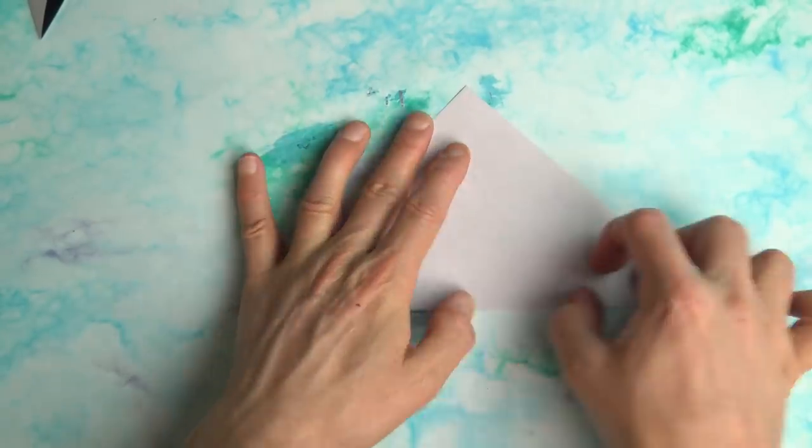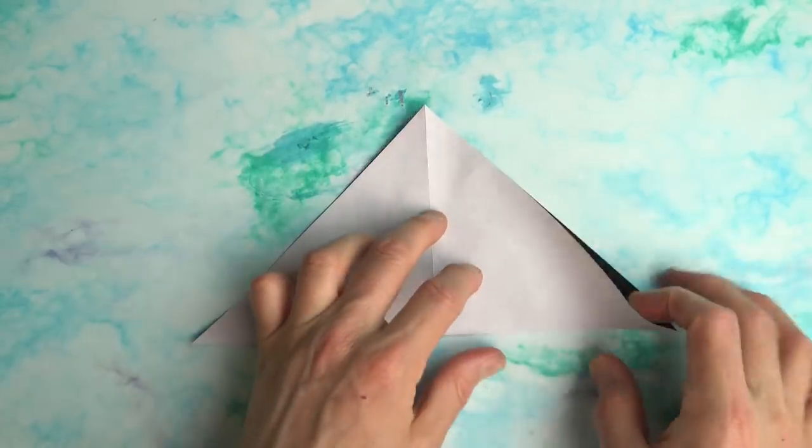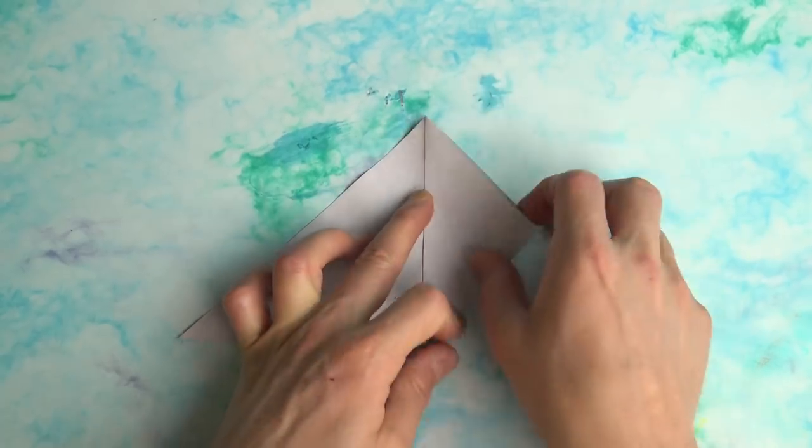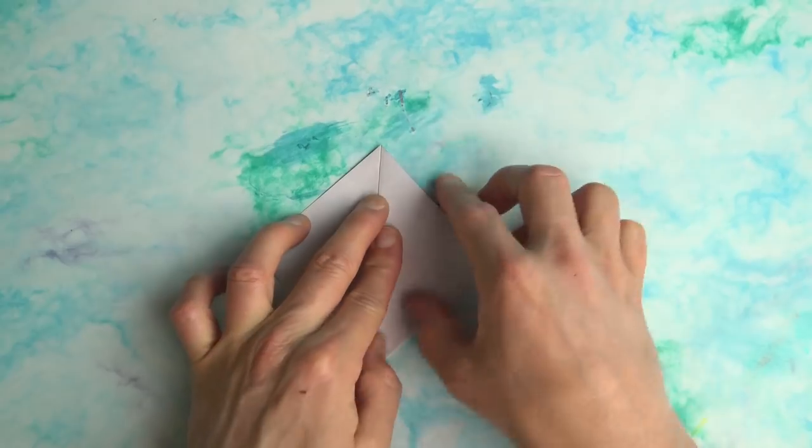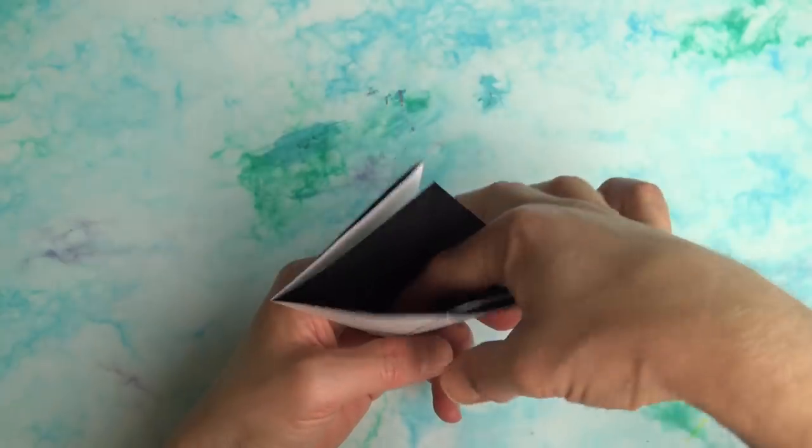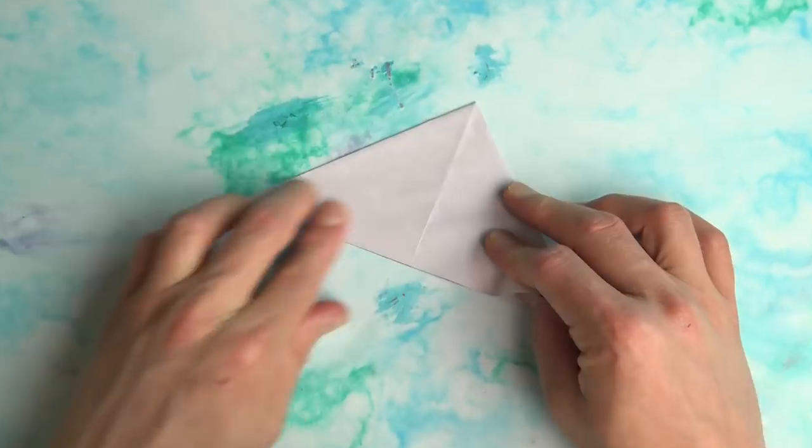Fold in half diagonally in both directions. Keep it folded in this direction and fold the corner to the top. Turn over and fold this corner to the top. Now open the big pocket and bring these two sides together and flatten. Here we have the waterbomb base.